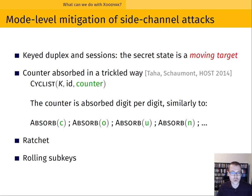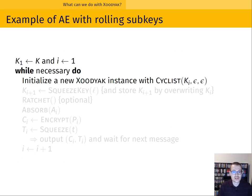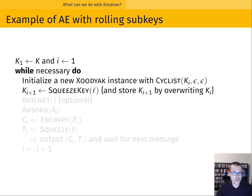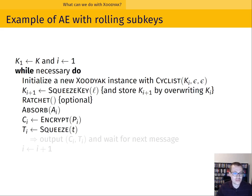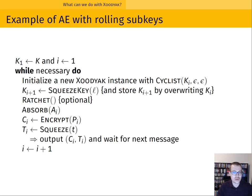We also support ratcheting and rolling subkeys. In this example, we initialize a Zodiac instance with key k_i, then immediately squeeze the next key k_{i+1} and replace k_i with it. We can then perform an optional ratchet, absorb metadata A_i, encrypt plaintext P_i obtaining ciphertext C_i, squeeze the authentication tag T_i, and output the ciphertext and tag pair. We increment the counter and repeat this process as many times as needed, each time squeezing a new key.